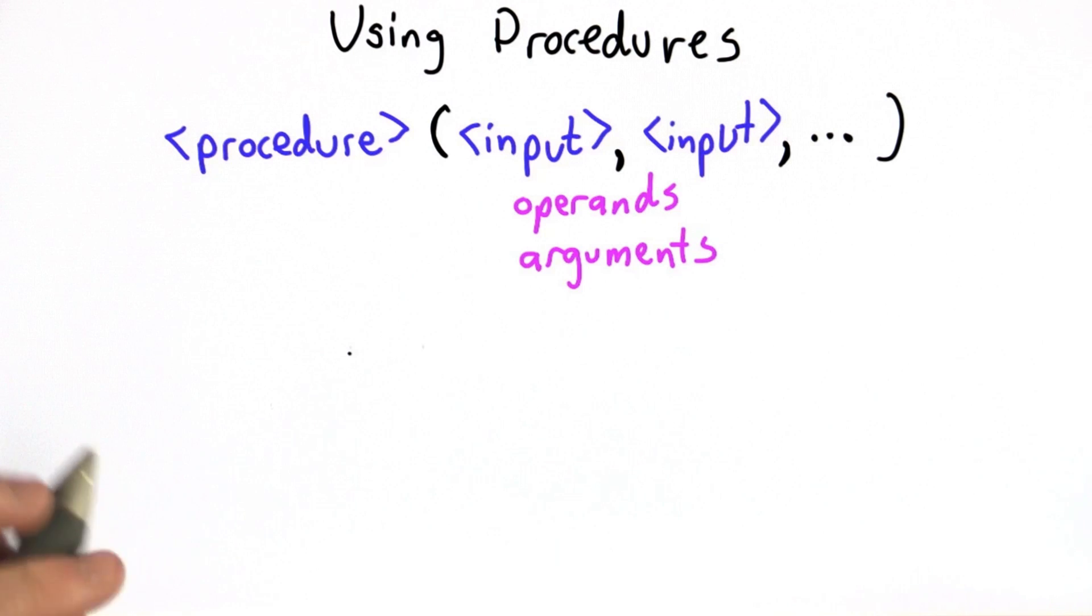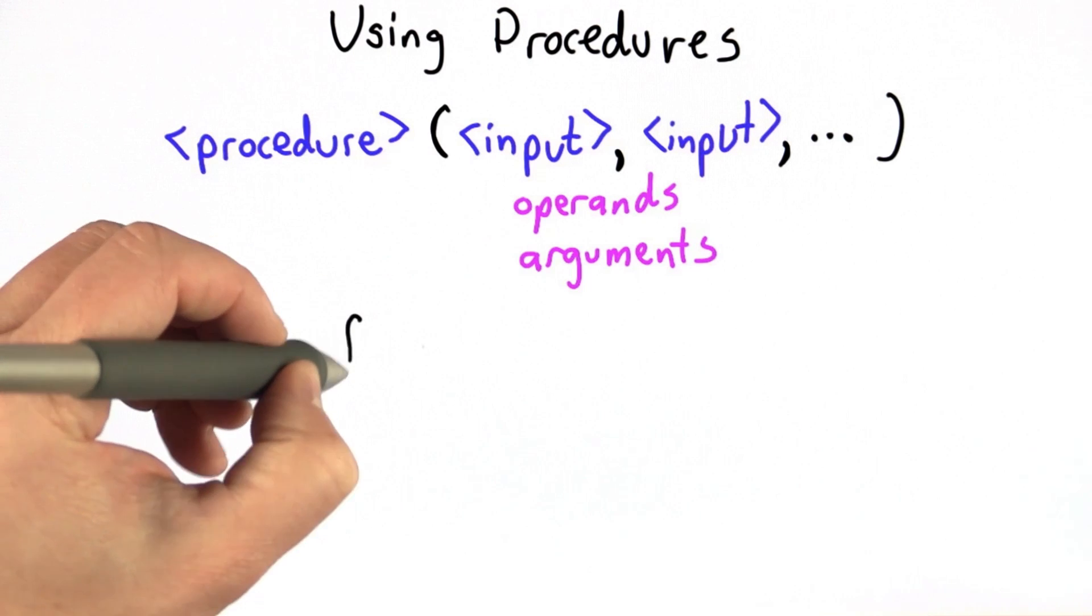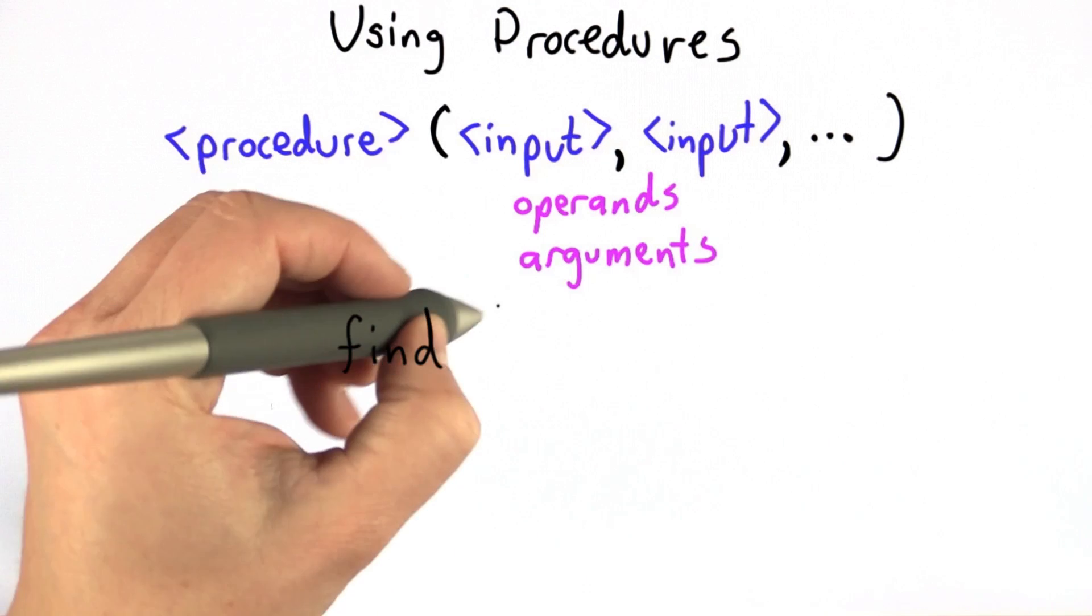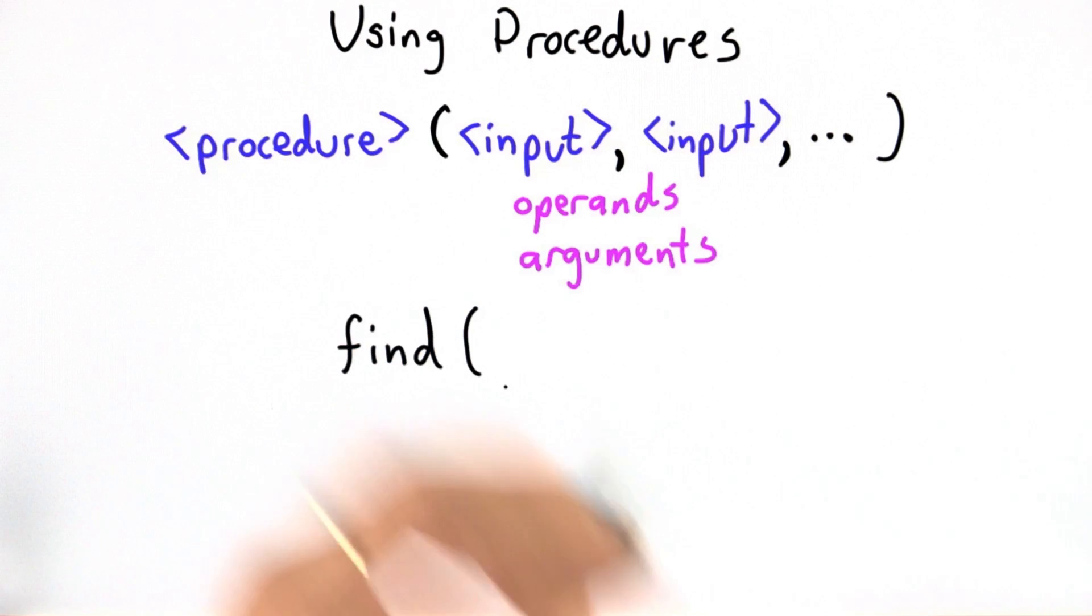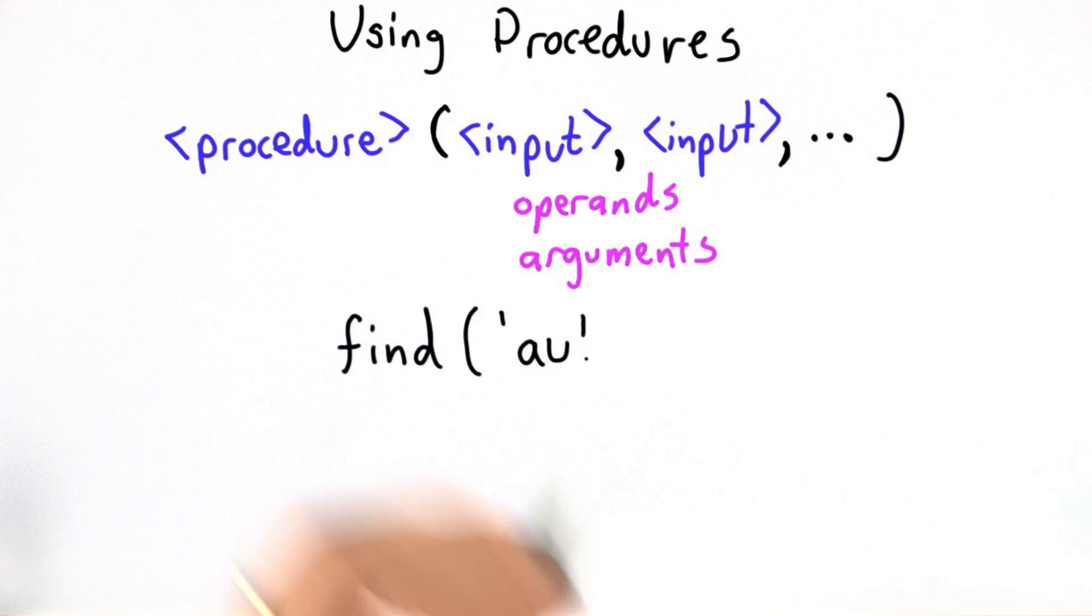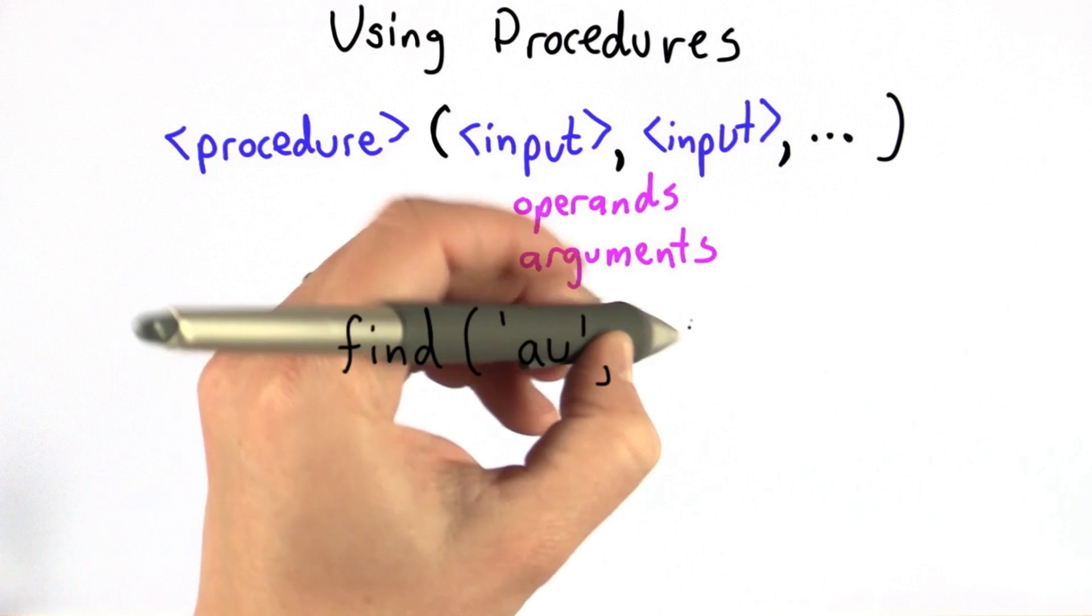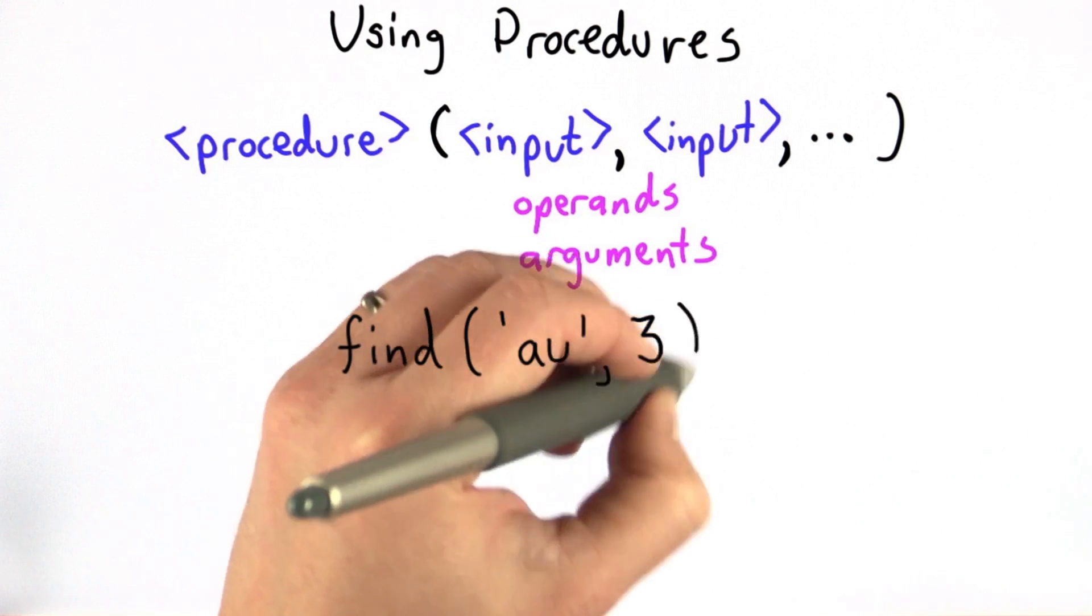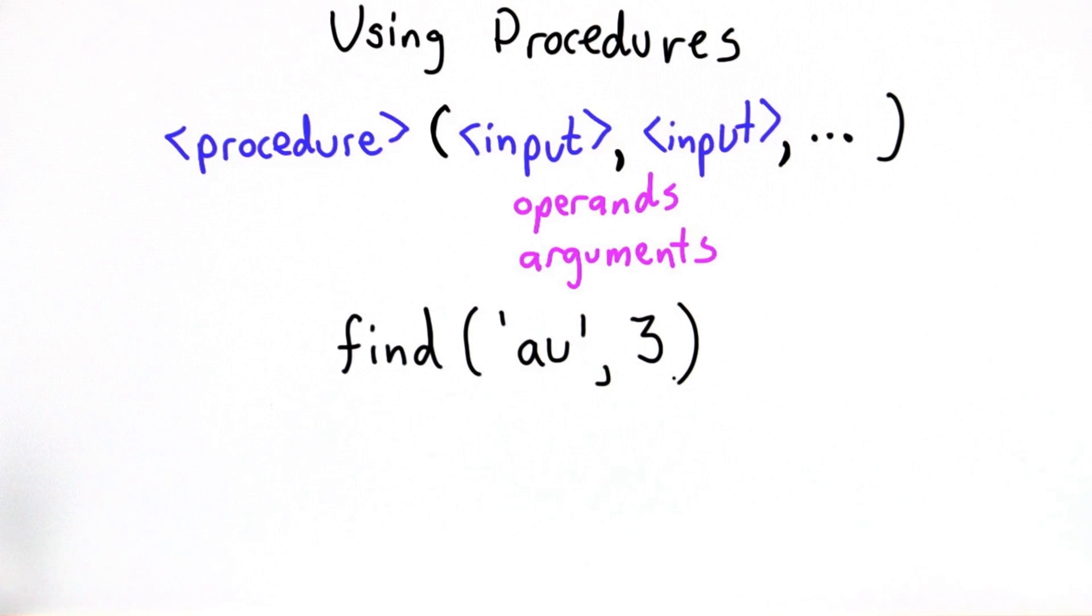So you've actually already done something quite similar to this. Back in unit one, you learned about using find on strings. And with find, you would pass in one or two inputs. The first input was a string that was the string that you're looking for. And the second input could be a number, the position where you start looking for that string. And so we used find in many ways in unit one, as well as you used it yourself in the homework.